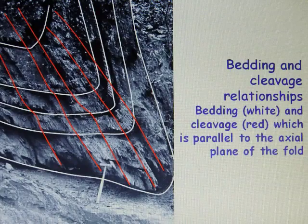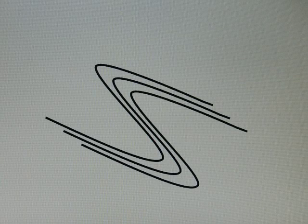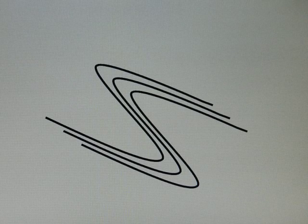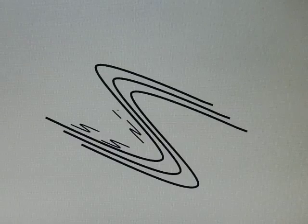So let's move on just a little bit to vergence of minor structures. If we have a simple fold couplet like that which is synform antiform, what of course we know is that minor structures will have a similar vergence on each side of that fold.